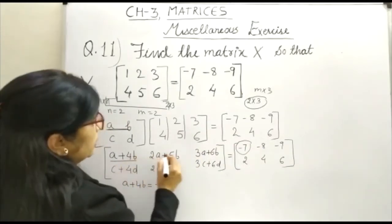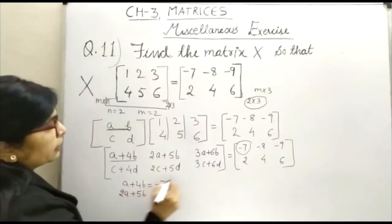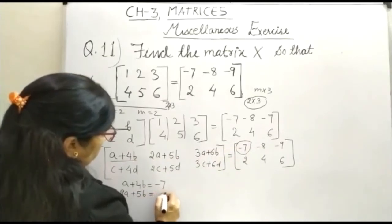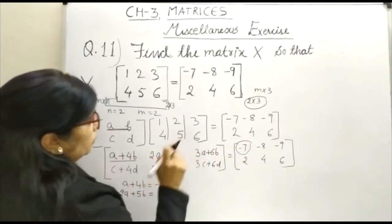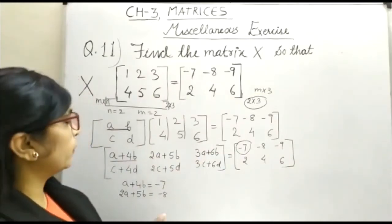You can take any other equation. Here, 2A plus 5B is equal to minus 8. Here, you are having three equations. So with the help of any two equations, you can get the value of A and B.